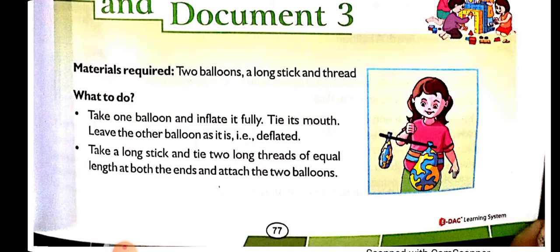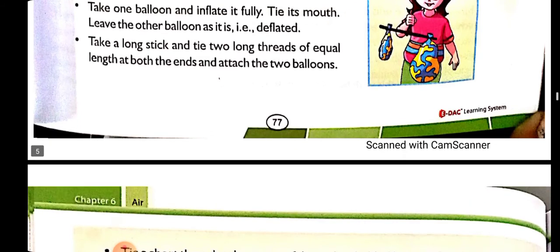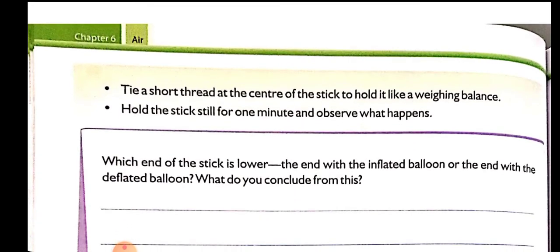The end with the inflated balloon will tilt downward compared to the deflated balloon side. Just like a weighing machine — whichever side has more weight, that side goes lower. The same thing happens here: the side with the inflated balloon will be lower as compared to the deflated balloon. So we can say that air has weight.